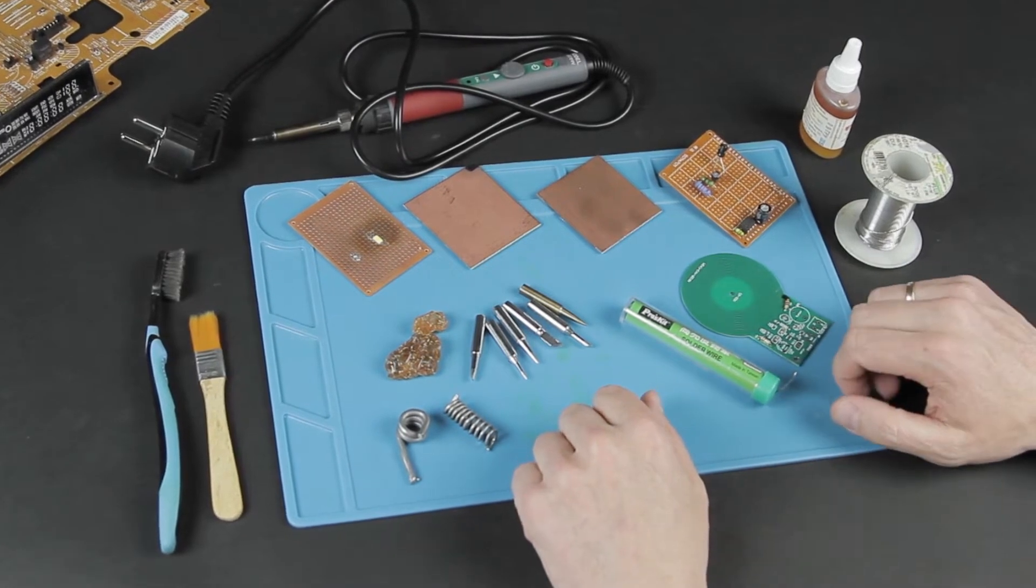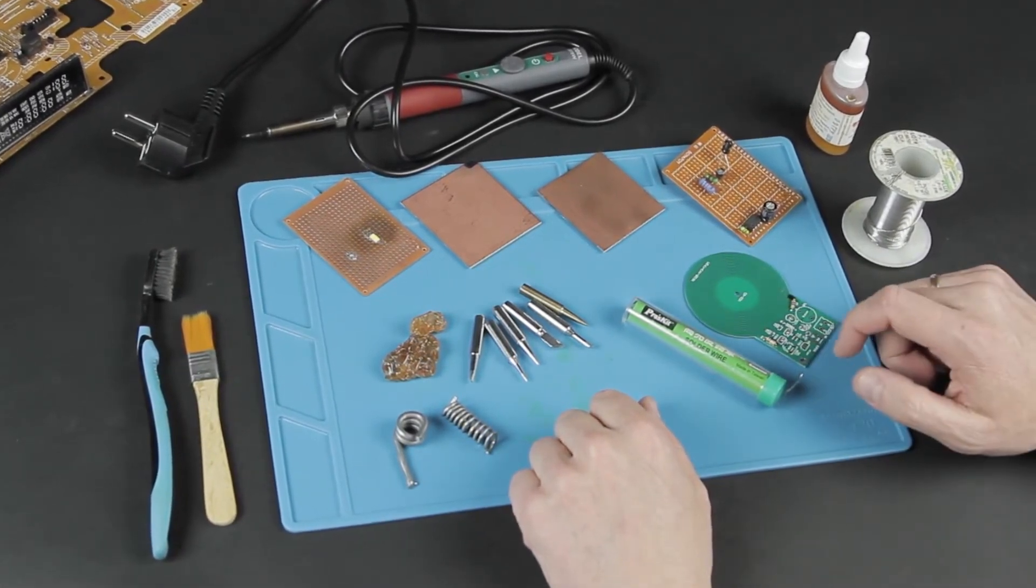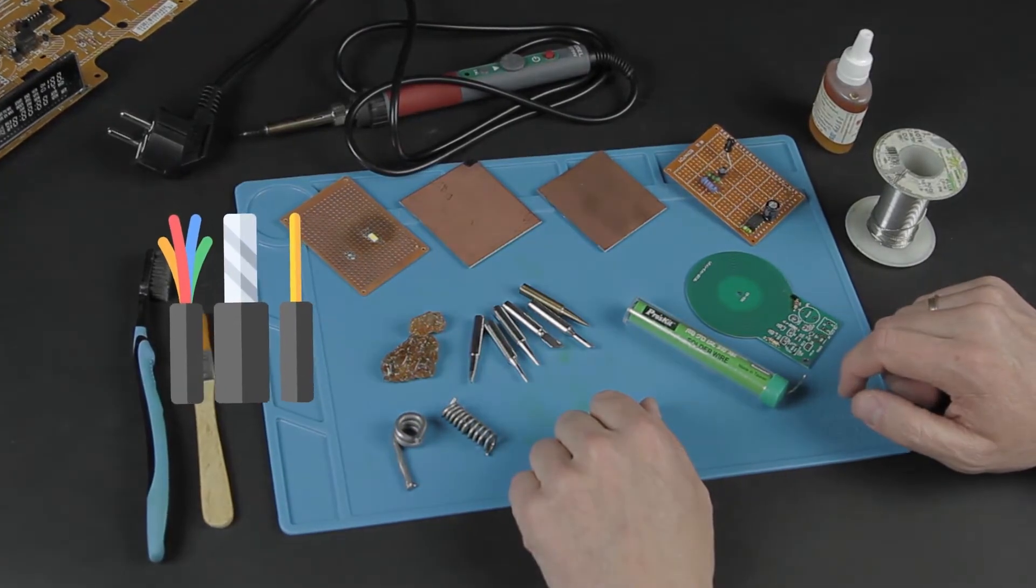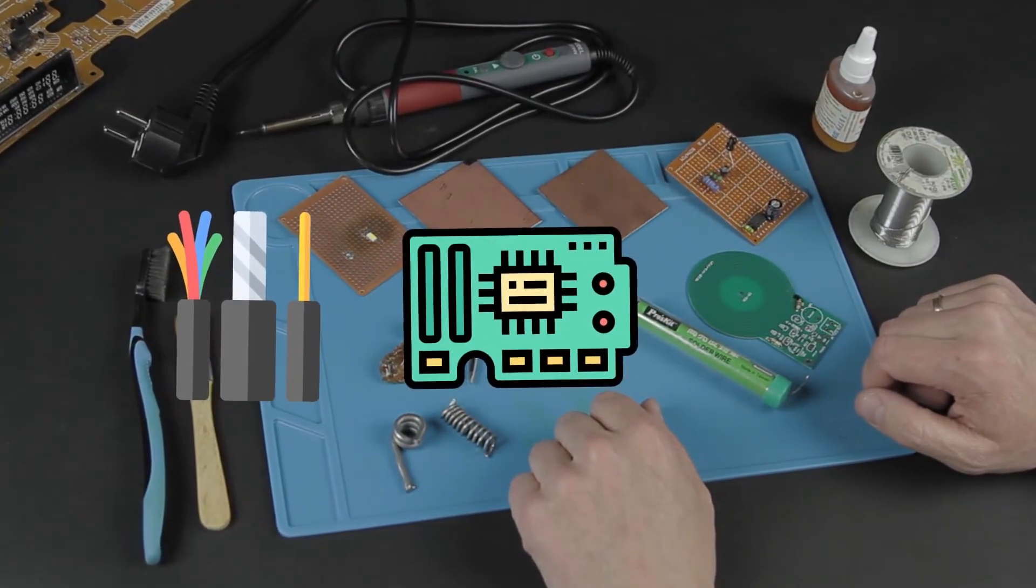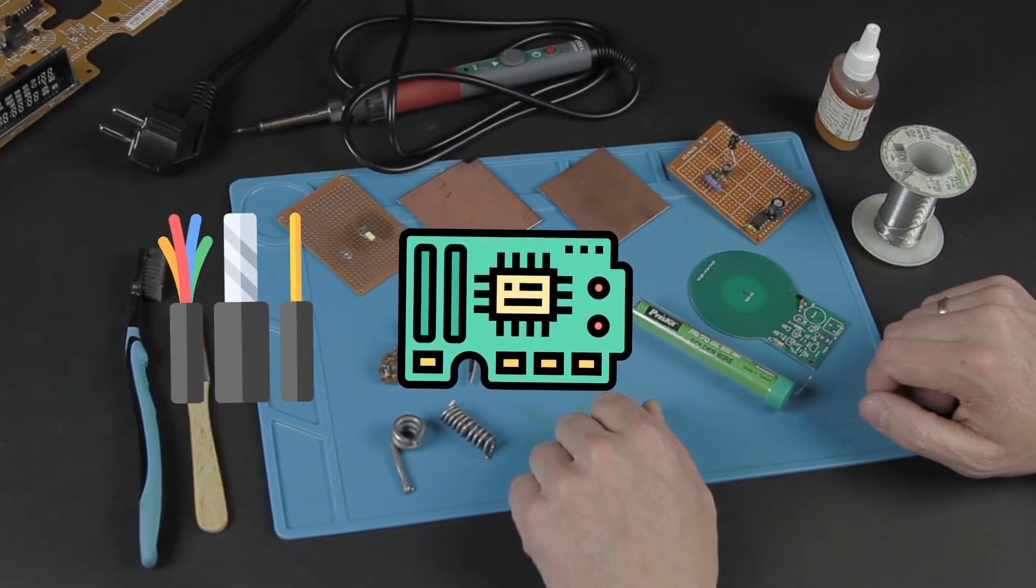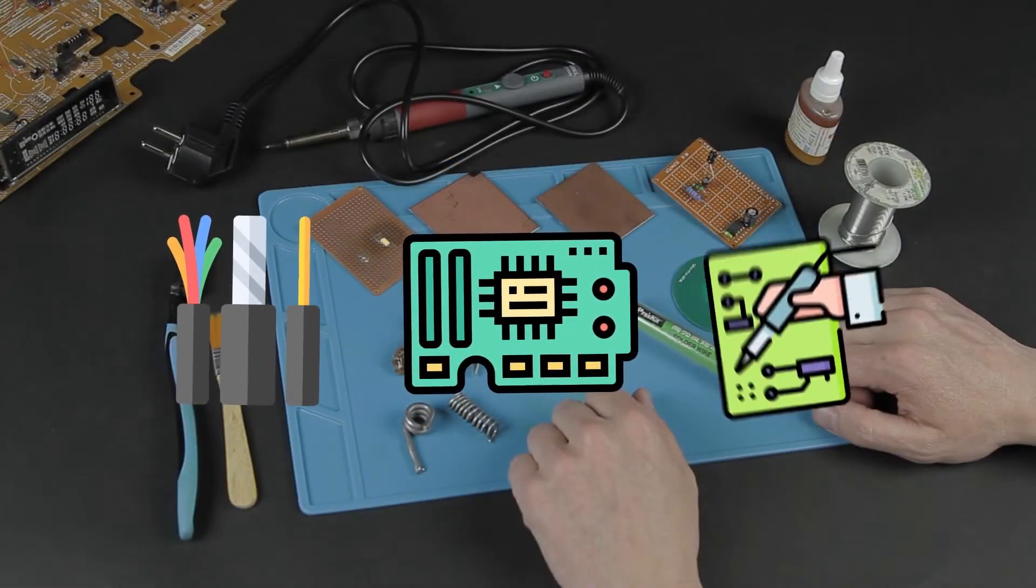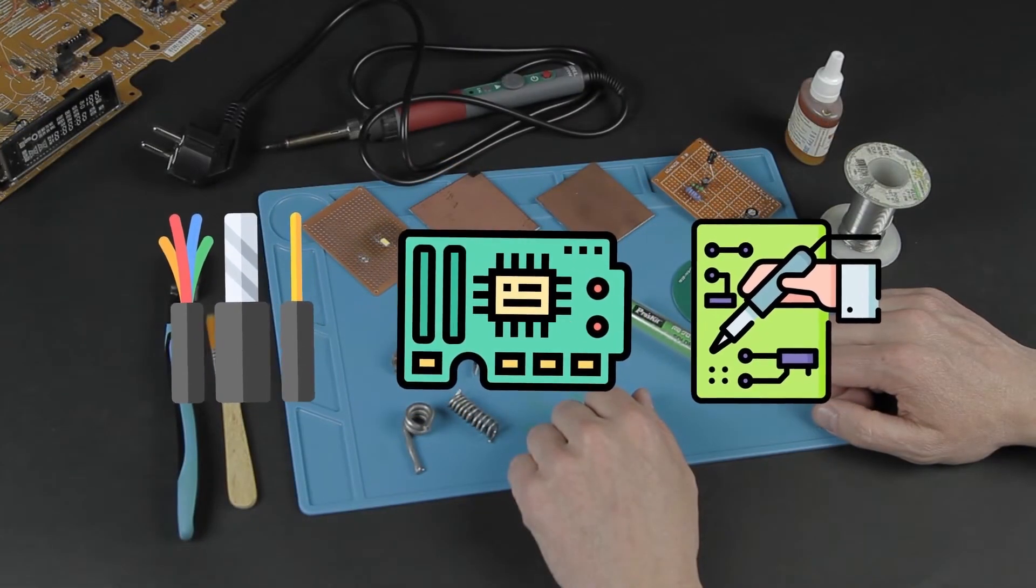Where can soldering be useful? In everyday life, soldering electrical wires, soldering contacts on the board of household appliances, and finally, hobbies, electronics, repairing the same household appliances.